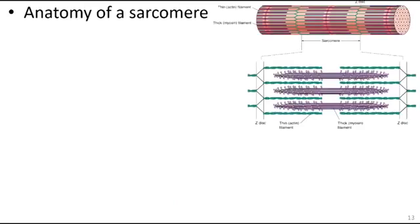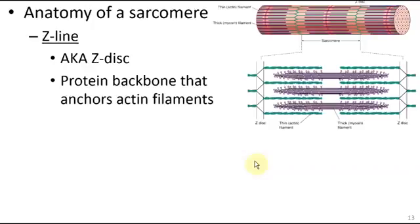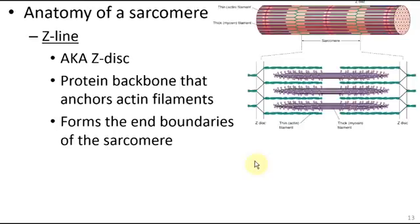Here's a picture of a sarcomere. The first thing to point out is the z-line or z-disc — this zigzag line on the end. That is the protein backbone that anchors the actin filaments to the sarcomere, forming the end boundary. From one z-disc to another is one sarcomere boundary, and right on the other side is another sarcomere, so the actin filament continues on.